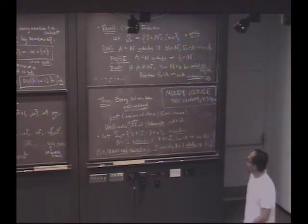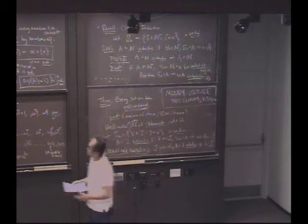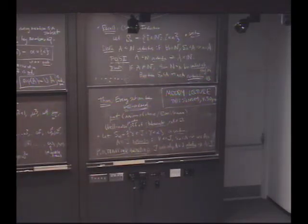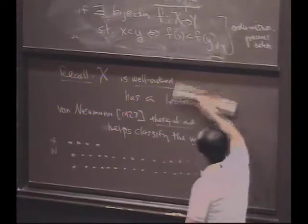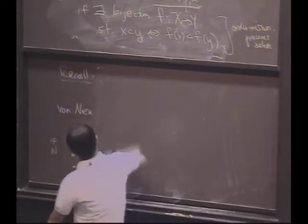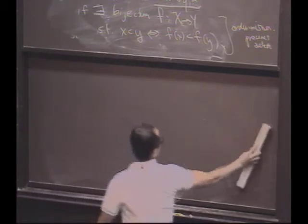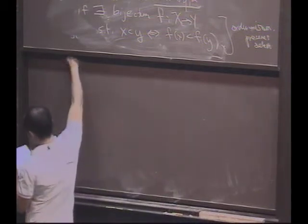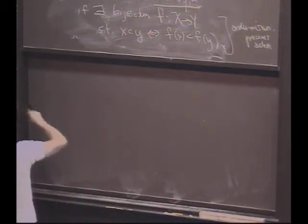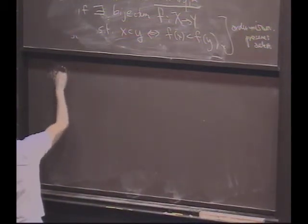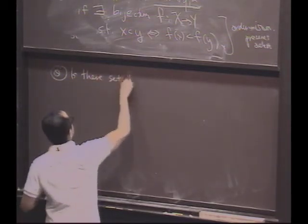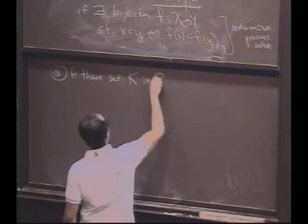Okay. Hmm. Okay. Cool. So, let me see if I can, I'm going to end with an application of transfinite induction. I'm going to sketch this just to give you a sense of how you might prove something by transfinite induction. So, here's a question. Is there a set, let's call it K, in R2?